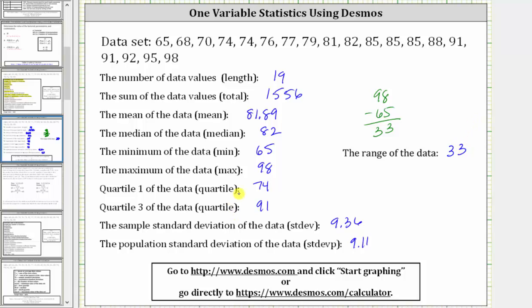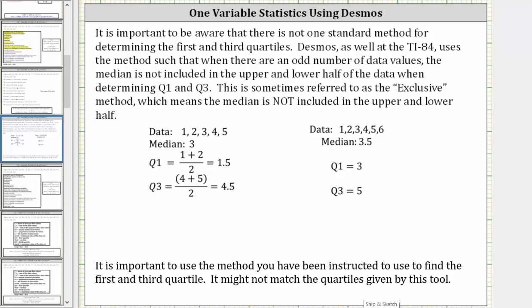Before we go, let's talk about the quartiles again. Depending on the method you're asked to use, you can get different results. It is important to be aware that there is not one standard method for determining the first and third quartiles. Desmos, as well as the TI-84, uses the exclusive method: when there is an odd number of data values, the median is not included in the upper and lower half when determining Q1 and Q3. For example, if three is the median, we do not include it in the lower half — so Q1 is the mean of one and two, and Q3 is the mean of four and five.